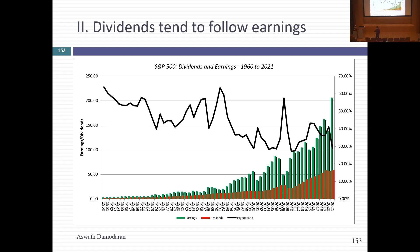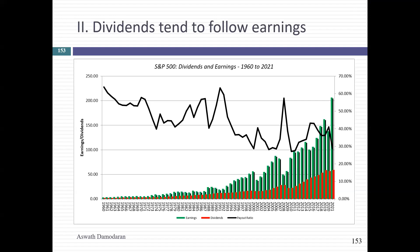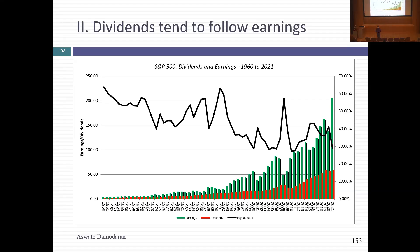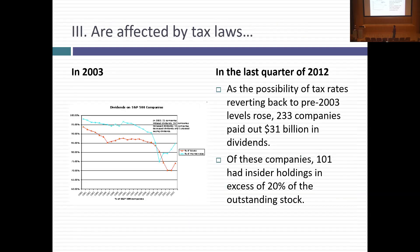Do you see why this freaks out value investors? If you're an old-time value investor, you were taught to focus on dividends — Ben Graham, dividend discount model. That dividend, collectively across companies, is becoming a smaller percentage of earnings. So: dividends are sticky, dividends tend to follow earnings, and they are affected by tax laws — not corporate tax laws, but individual investor tax laws.